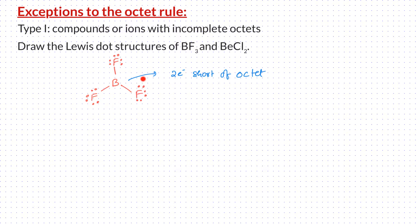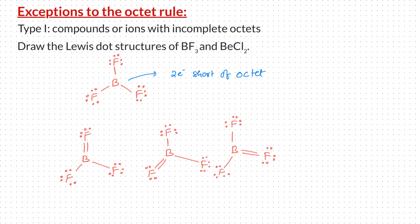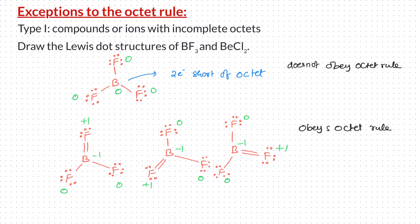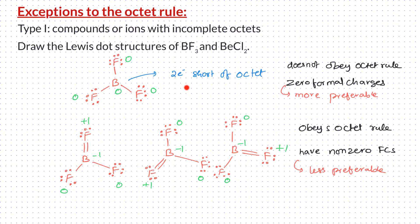There are 3 different fluorine atoms from which I can transfer this electron pair. Therefore, there are 3 different resonance structures possible. Now let us calculate the formal charges on all the atoms for the 3 resonating structures and the original structure. Here are the formal charges. The structure on the top does not obey the octet rule; the 3 structures on the bottom do obey the octet rule. If you look at the formal charges, the structure on the top has all zero formal charges, while the structures below have non-zero formal charges. We have learned earlier that zero formal charges are more preferable than non-zero formal charges.